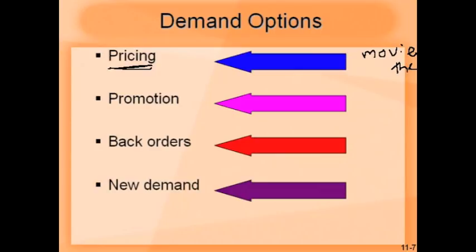Some restaurants give early-bird specials — price discounts if people come slightly early for dinner. There are also strategies based on promotions: if demand is low, promotion may help improve demand and match capacity. However, if demand created by a promotion is much higher than capacity can fulfill, there could be issues. Back orders are basically orders taken in one period with delivery promised for a later period — after one week, two weeks, or maybe four weeks.